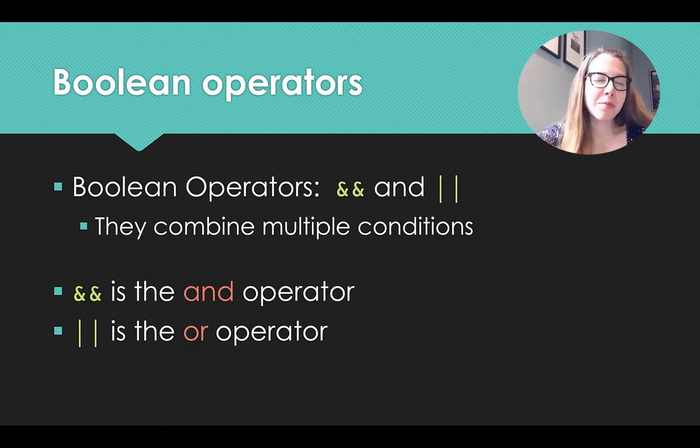So there are a couple different operators that we can use alongside Boolean variables. And they are AND and OR operators. These Boolean operators combine multiple conditions. So when we see two ampersands together, it looks like AND, AND, this is the AND operator. We're going to step through what these mean in a moment. If we see two pipes, that is the OR operator. So AND and OR.